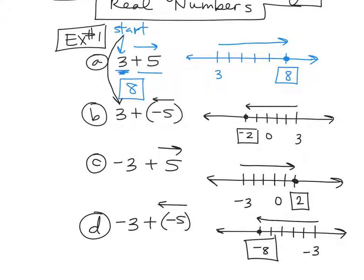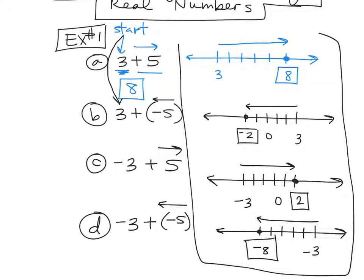Student: And if the question is like negative 3 minus negative 5, don't we change it into like plus a positive? Teacher: Yep, we'll get there in just a little bit. So those are the number line setups you're going to need to know: a positive plus a positive, a positive plus a negative, a negative plus a positive, and a negative plus a negative. So when they ask you to do it on a number line, this is what they want to see.